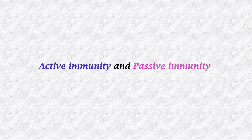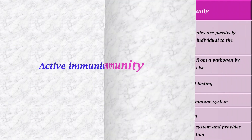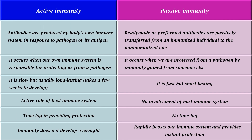Active immunity and passive immunity. In active immunity, antibodies are produced by the host's own immune system in response to a pathogen or its antigen. In passive immunity, ready-made or pre-formed antibodies are passively transferred from an immunized individual to a non-immunized one. Active immunity is slow but usually long-lasting. Passive immunity is fast but short-lasting.